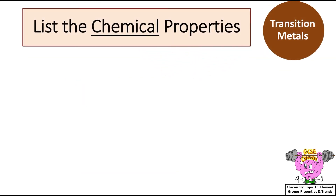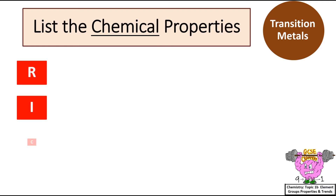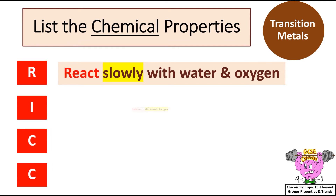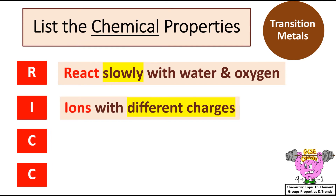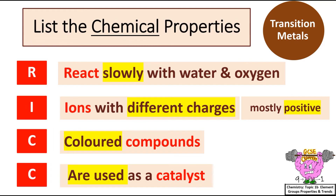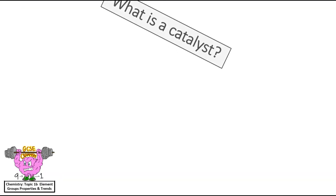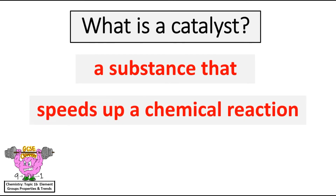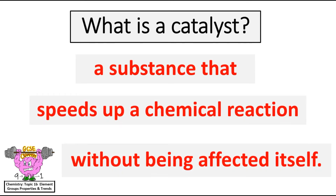List the chemical properties of transition metal elements. I remember these by using the acronym RICC: R for react, I for ions, C for compounds, and C for catalyst. Transition metals react slowly with water and oxygen, have ions with different charges, which are mostly positive, form coloured compounds, and they're used as a catalyst. What is a catalyst? A substance that speeds up a chemical reaction without being affected itself.